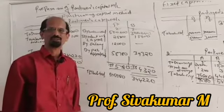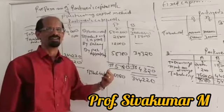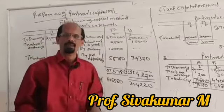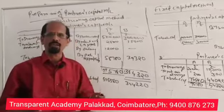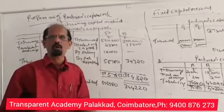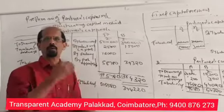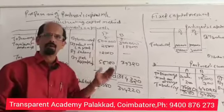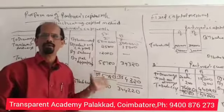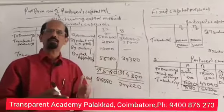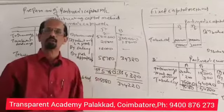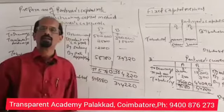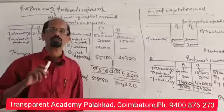In the first class, we are going to do a P&L Appropriation Account. In the P&L Appropriation Account, we are going to cover the Net Profit credit item, Interest on Drawings, Interest on Capital, Partner Salary, and Commission. We are going to balance the P&L Appropriation Account and the Profit Share Ratio.